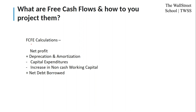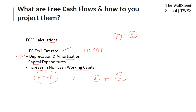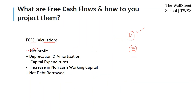For FCFE, we start with net profit — because the debt holders have already been paid, the interest adjustment from the FCFF calculation is not required here. We add back depreciation and amortization, subtract capital expenditures and any working capital investment, and finally add back the net debt borrowed, which gives us the free cash flow to equity (FCFE).